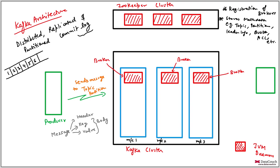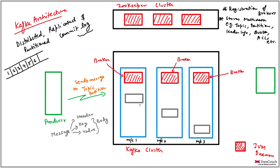These messages are going into the log, but this log is not on a single machine because it is distributed and partitioned — it is on multiple machines. This topic will have partitions, and a partition is actually a portion of the log. Let's say topic one, partition one — there are three copies replicated across machines, so it is distributed.